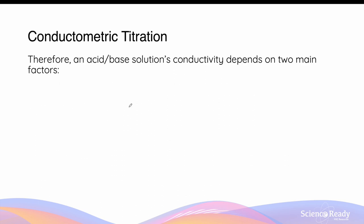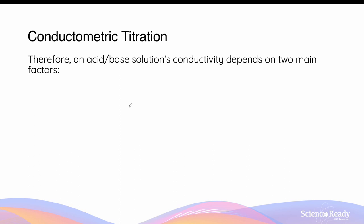When thinking about an acid-base solution and its conductivity, there are two main factors that determine how conductive the solution will be. The first factor is concentration. A greater concentration of an acid-base solution means there will be more moles of ions present, giving a greater conductivity.